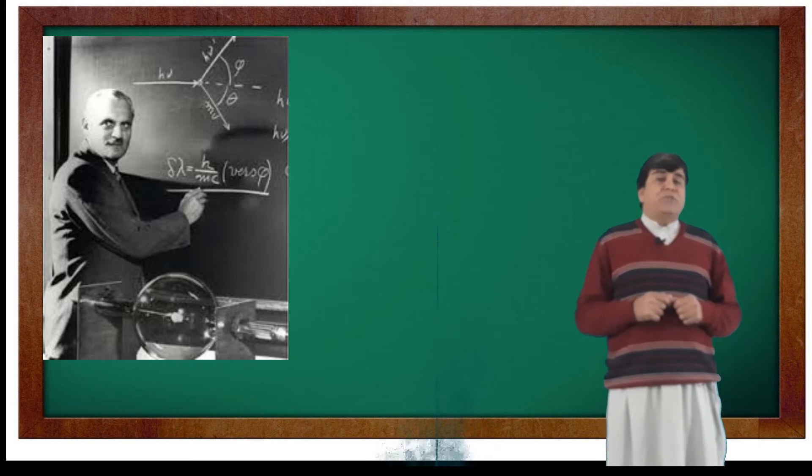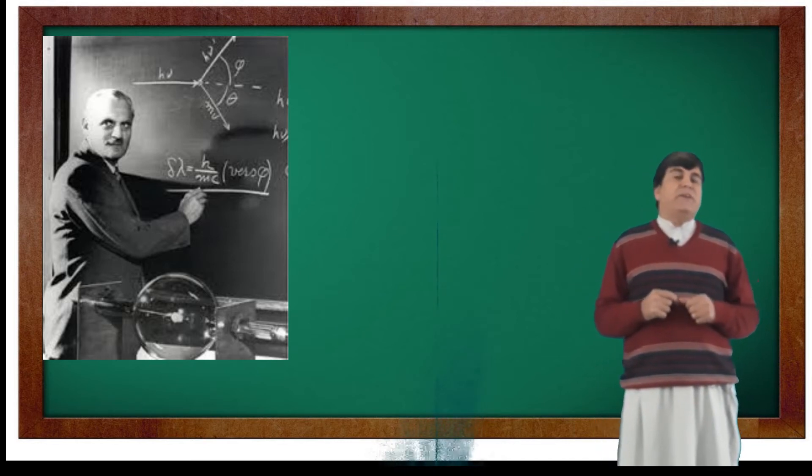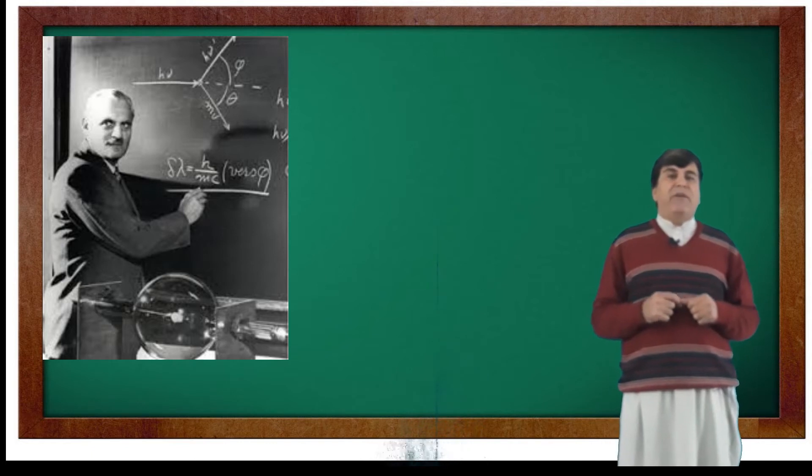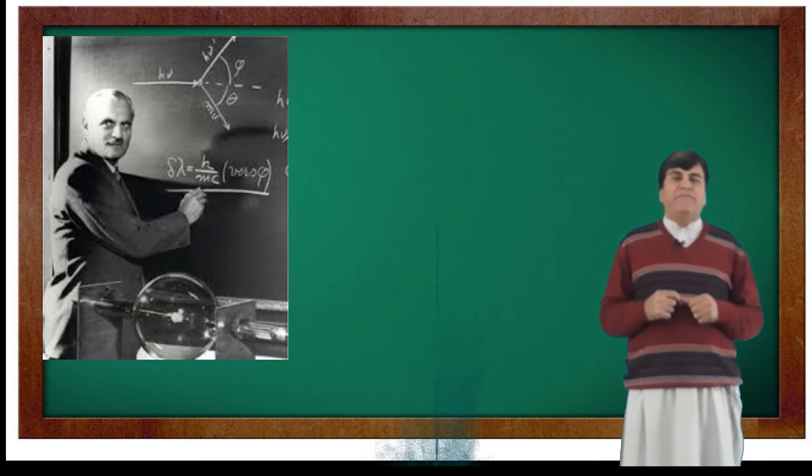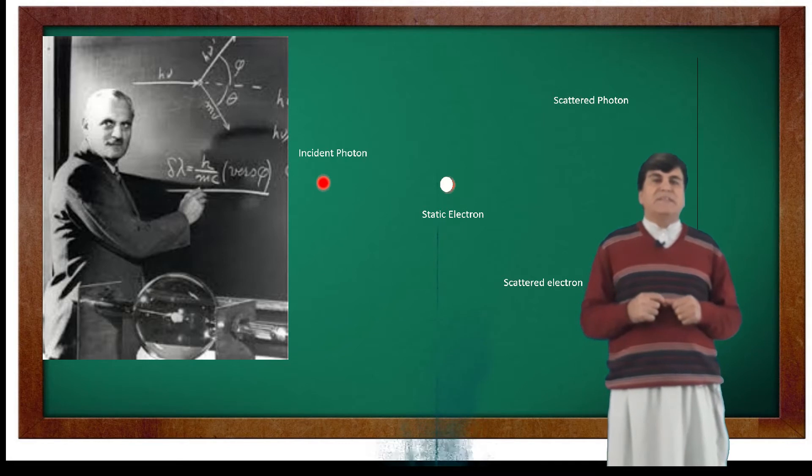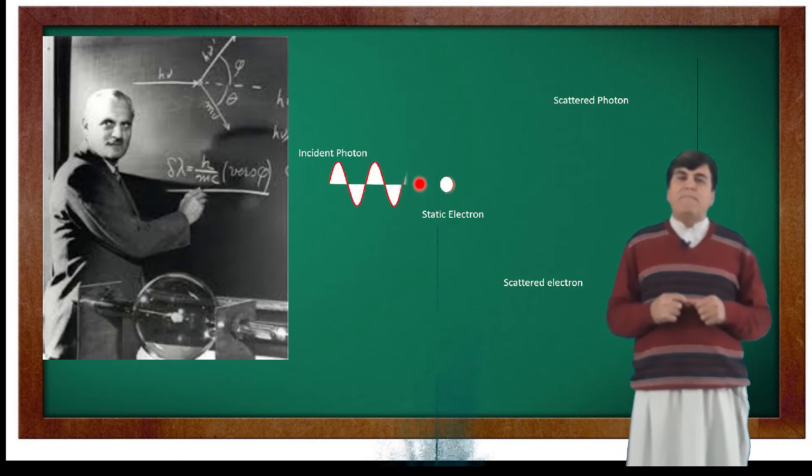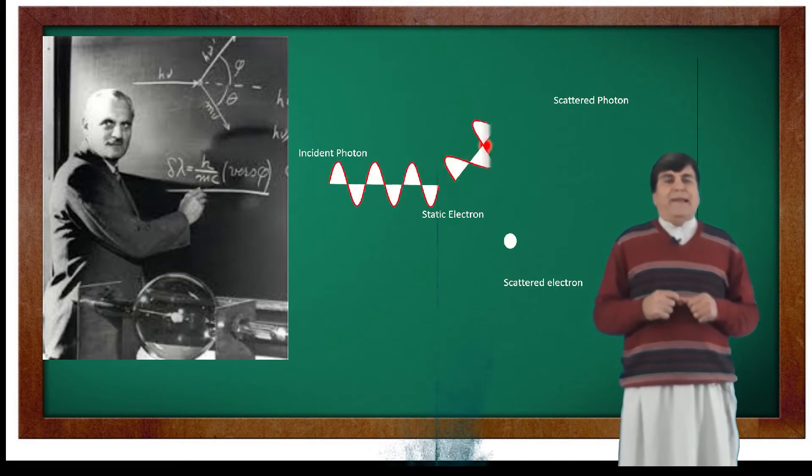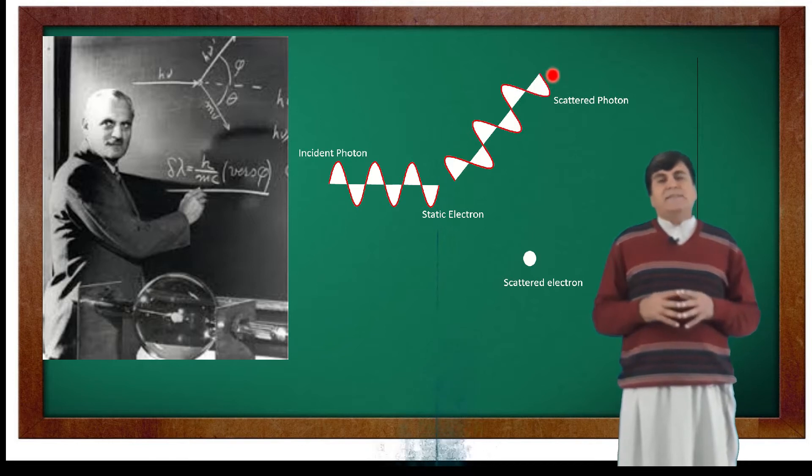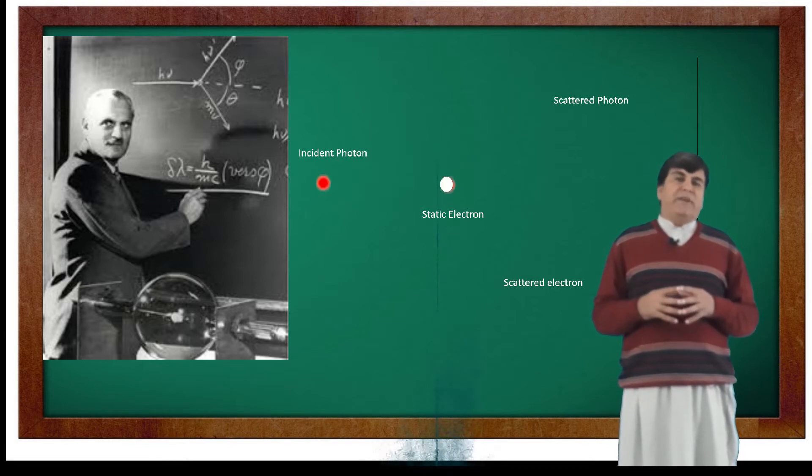In 1922, Compton observed that when a monochromatic beam of x-rays of wavelength lambda is allowed to fall on a light element such as carbon, it emits electrons. The incident x-ray scatters at various angles.